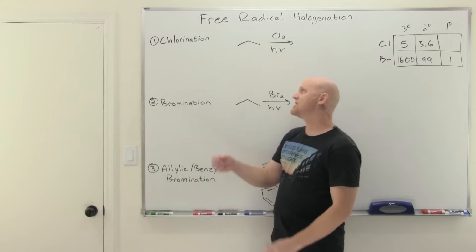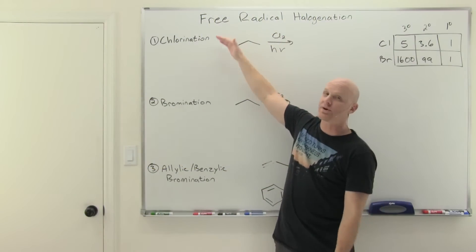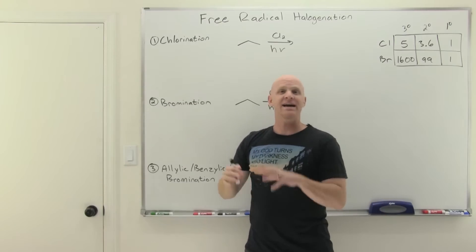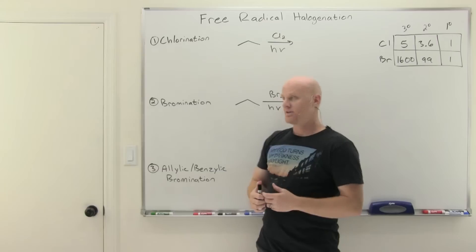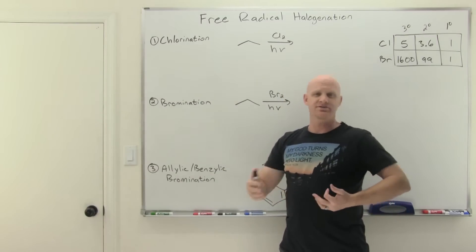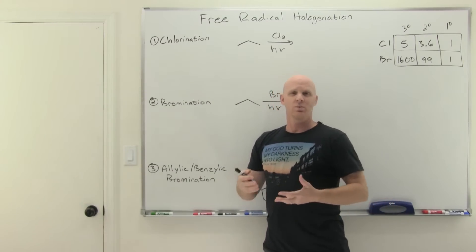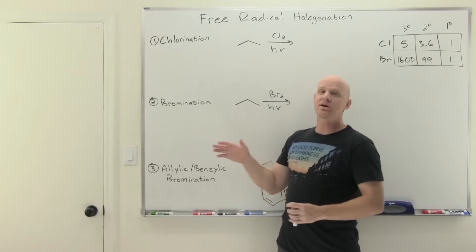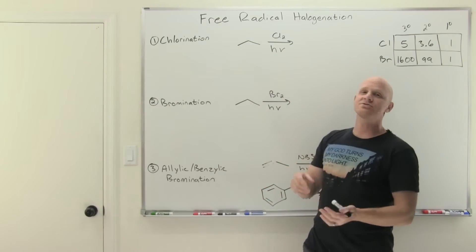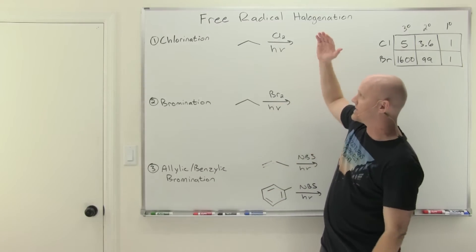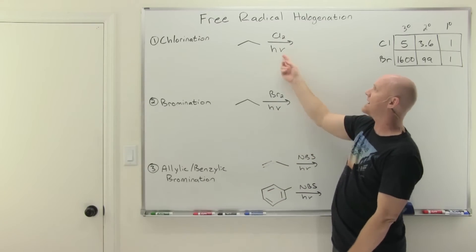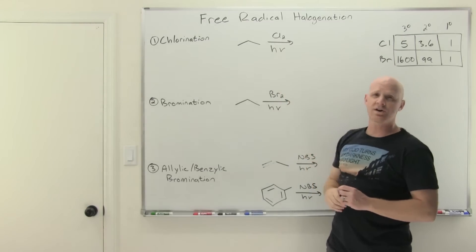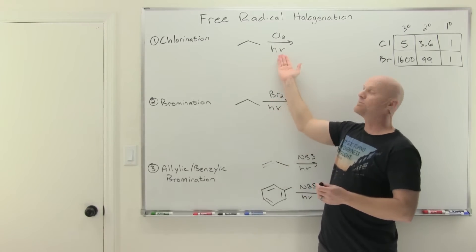Free radical halogenation involves either chlorination or bromination — these are substitution reactions that replace a hydrogen with a halogen. We don't often talk about them as substitutions because when we use the word substitution we think of SN1 or SN2, but this is not SN1 or SN2 — it is a substitution. We start with chlorination: the reagents are Cl2 and light, hν, the energy of a photon of light. You need light of just the right wavelength to break the chlorine-chlorine bond in Cl2.